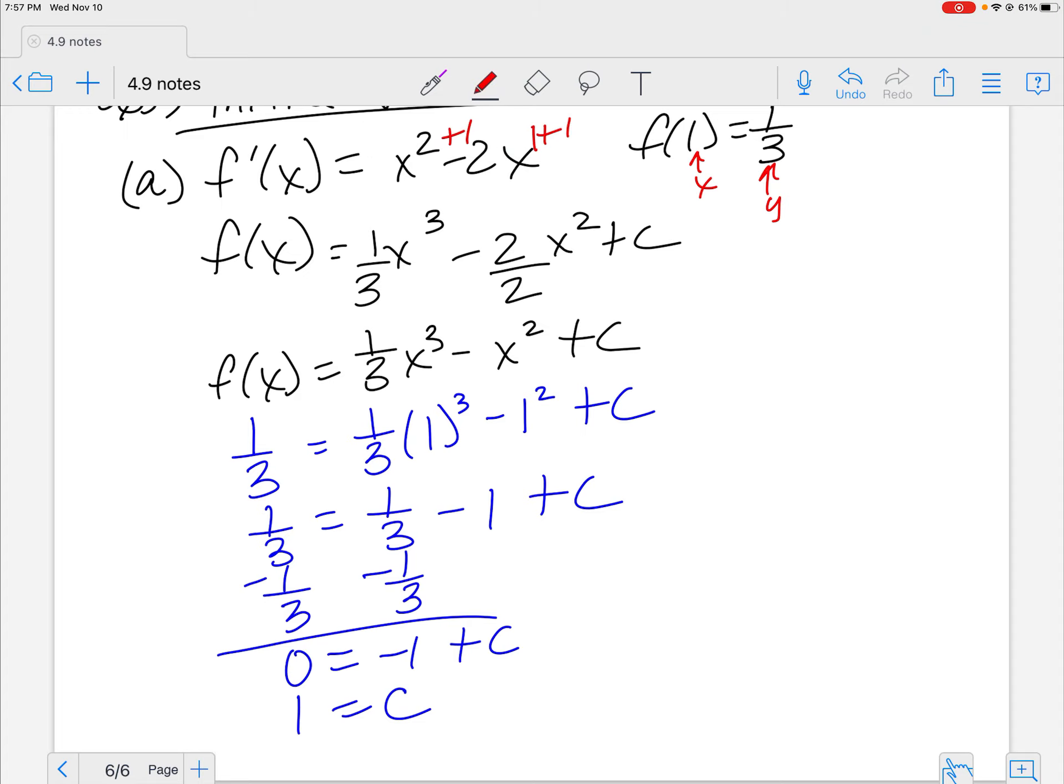0 is equal to negative 1 plus C, then I add that 1, and C is equal to 1. They don't always come out that sweet and nice, but enjoy it when it does.